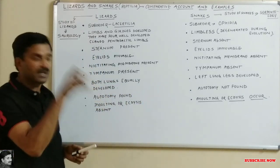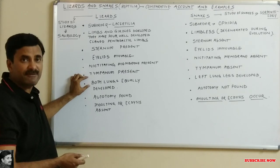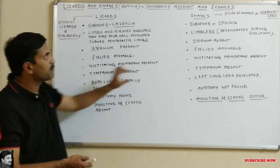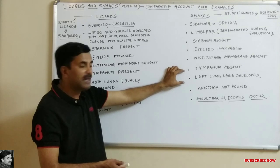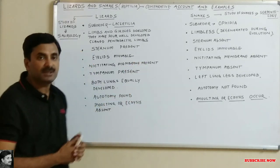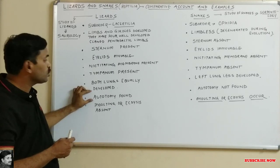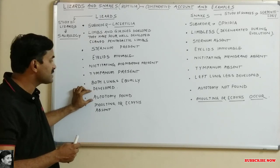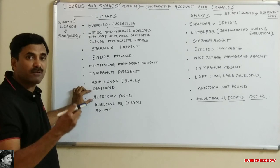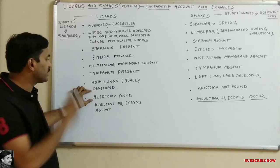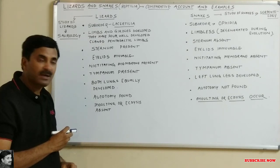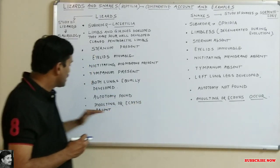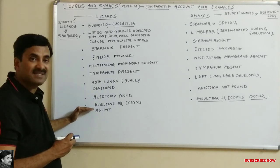Both lungs are equally developed in lizards — both are of the same size and shape. But in snakes, the left lung is less developed compared to the right lung. Autotomy is a feature of lizards — it is the voluntary breakage of the tail to confuse the enemy at the time of danger. Autotomy is absent in snakes.